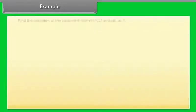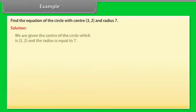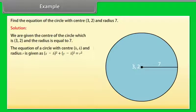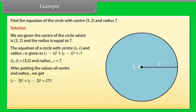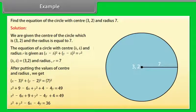Example: Find the equation of the circle with center (3, 2) and radius 7. Solution: We are given the center (h, k) = (3, 2) and radius r = 7. The equation of a circle with center (h, k) and radius r is (x - h)² + (y - k)² = r². Substituting h = 3, k = 2, r = 7, we get (x - 3)² + (y - 2)² = 49. Expanding, we get x² + y² - 6x - 4y = 36.